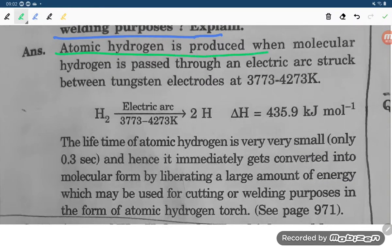Atomic hydrogen is produced when molecular hydrogen is passed through an electric arc struck between tungsten electrodes at 3773 to 4273 Kelvin. That is a very high temperature.